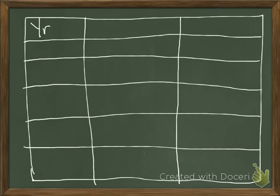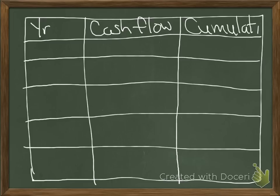So we have year right here. We have cash flow. So this is the cash inflow that's coming in every year. And then we have cumulative. All right. So let's put our years in first. So year zero, one, two, three, four.